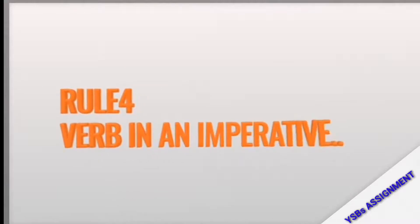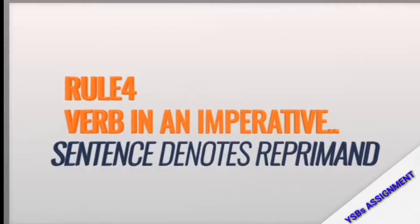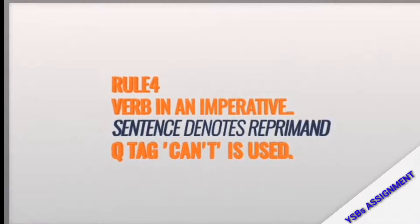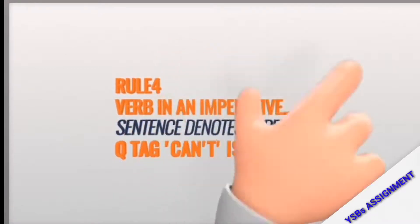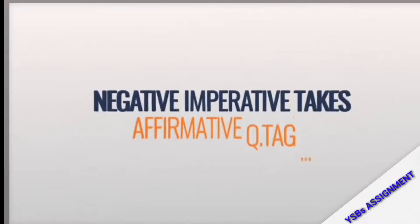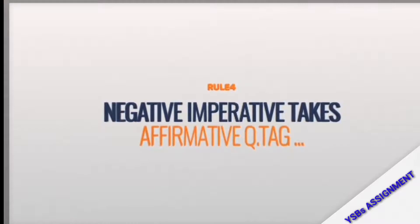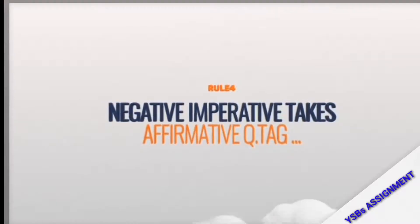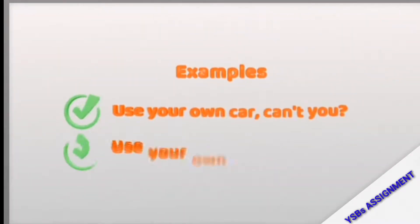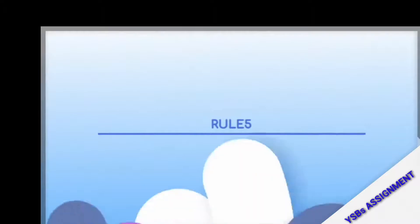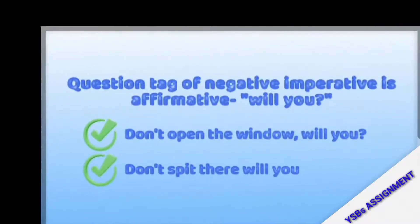Rule number four: when the verb in an imperative sentence denotes a reprimand, the question tag 'can't' is used. Example: 'Use your own car, can't you?' / 'Use your own book, can't you?' For the second part of rule four: a negative imperative takes an affirmative question tag. When giving a negative instruction like 'please don't do this,' the affirmative question tag is used. So negative imperatives always take an affirmative question tag.